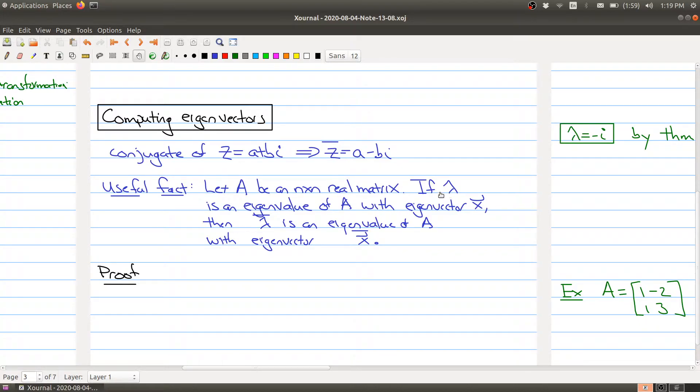You can assume that they're complex eigenvalues and eigenvectors. Then once you can figure that out, you actually know that the conjugate of the original eigenvalue is still an eigenvalue of A, and its corresponding eigenvector is the vector that you get by taking the conjugate of each entry of the original eigenvector. The proof is pretty straightforward.